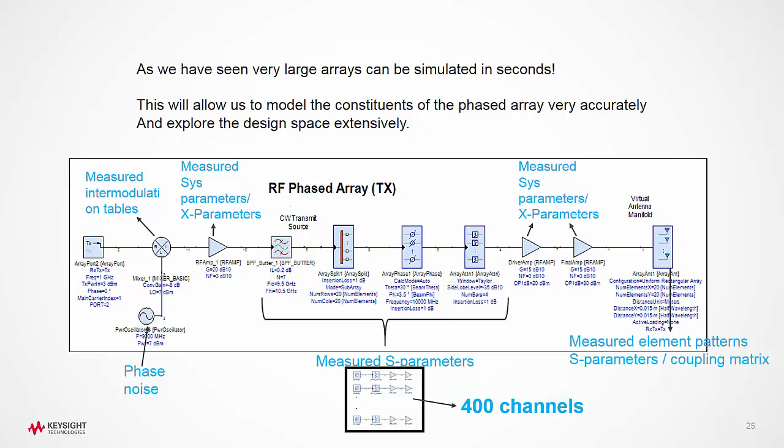While these are certainly limitations to design even a single path RF system, they become severe limitations in the design of phased arrays. The designer needs to have insights into all the paths. If you remember the previous block diagram, we had 400 different paths.